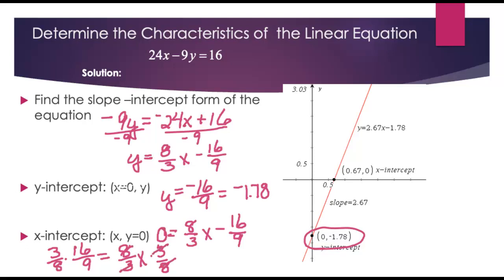So all of this cancels out and leaves me with just x. And here I can reduce, 8 going to 16 two times. So we end up having 6/9. I could have reduced this too. Let's do that. 3 going to 3 and 3 going to 9 three times. So I end up with 2/3 is equal to x. So our x-intercept is 2/3, 0, or 0.67, 0.